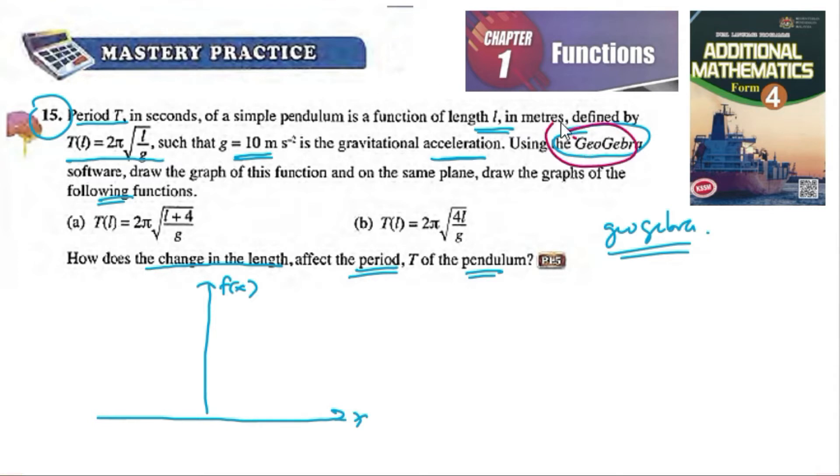When you use GeoGebra, you will get something like this for 2π√(l/g), and then something like this for 2π√((l+4)/g), and then you will get this curve.